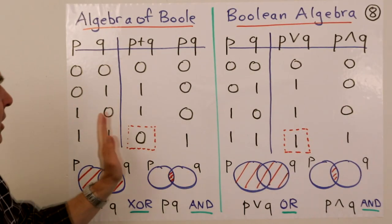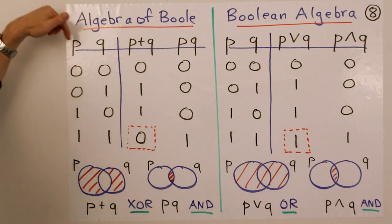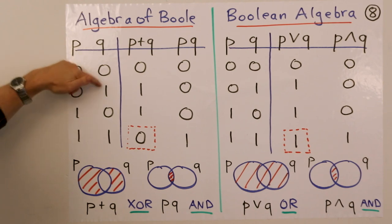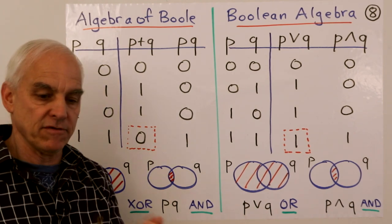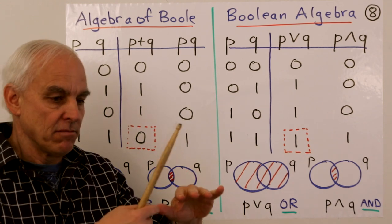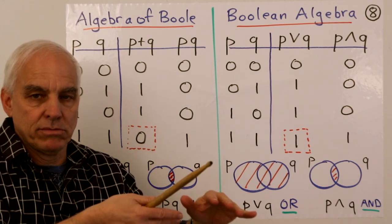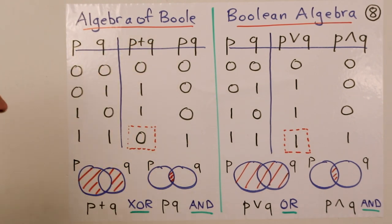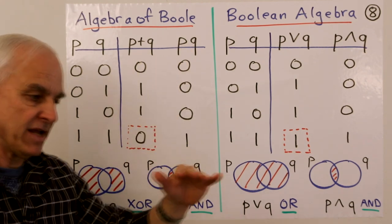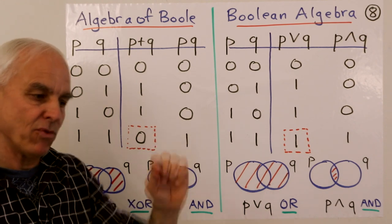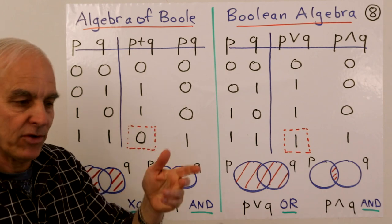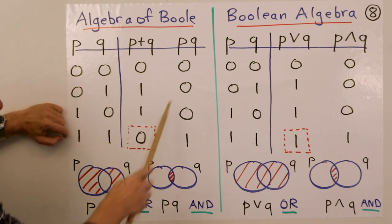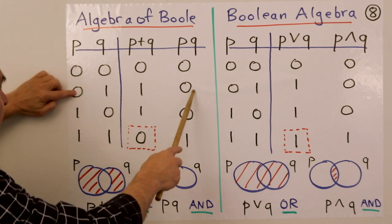Let me summarize the situation with this little table. Here's the algebra of Boole we've been talking about. We have two propositions P and Q with their various on-off values: (0,0), (0,1), (1,0), (1,1) — running through the four possible relative values. We think of these as binary-valued functions on some population, elements of B₂ⁿ. There are two operations: the sum and the product. The sum is the mod 2 sum: 0, 1, 1, and crucially 0. The product is the mod 2 product: 0, 0, 0, and 1.